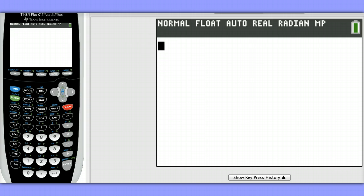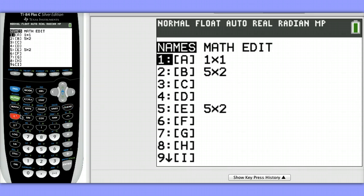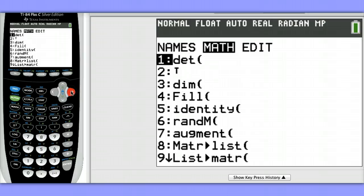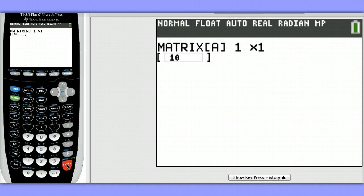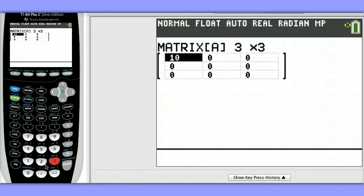To begin, we'll enter our data in matrix A. Hit second, x to the negative one, go over to edit, and choose edit matrix A. We don't want matrix A to be a one by one matrix, we want it to be a three by three matrix, so hit three, enter, three, enter. And now we can fill in our matrix.